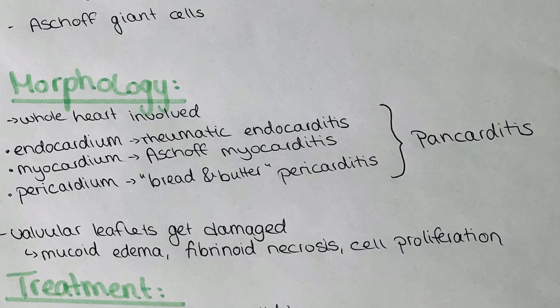In the myocardium, we have Aschoff myocarditis with Aschoff bodies and sometimes Aschoff giant cells. In the pericardium, we have the bread-and-butter appearance of pericarditis due to fibrinous depositions. The valvular leaflets also get damaged, which is usually visible by mucoid edema, fibrinoid necrosis, and extensive cell proliferation.